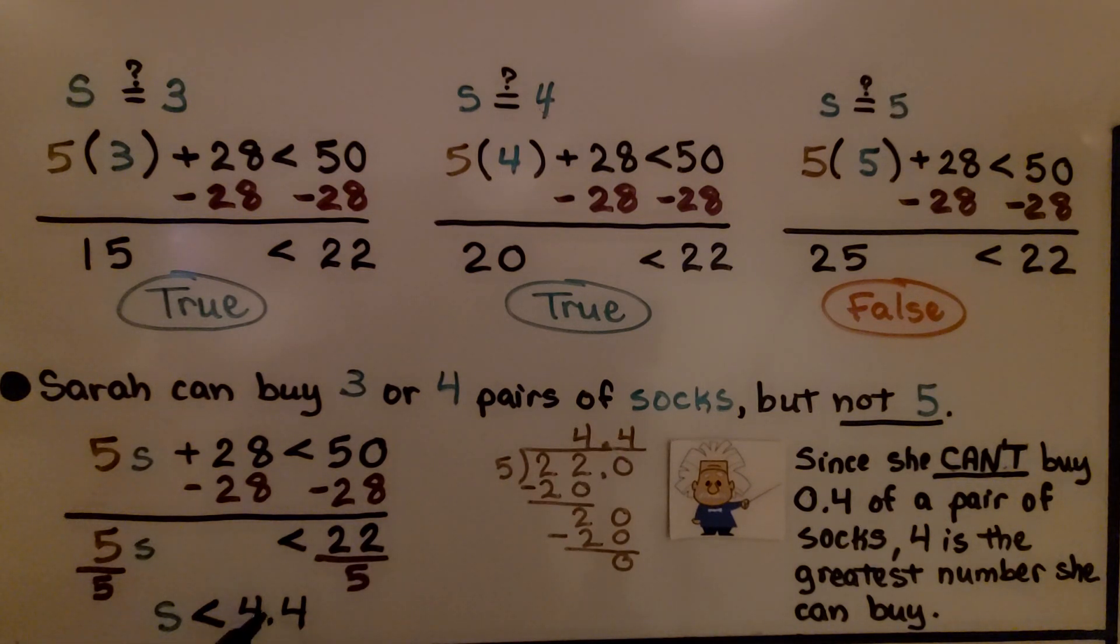When we do 22 divided by 5, we get 4 and 4 tenths. So we know the number of pairs of socks she can buy has got to be less than 4 and 4 tenths. And since she can't buy 4 tenths of a pair of socks, 4 is the greatest number she can buy.